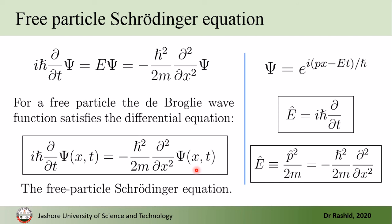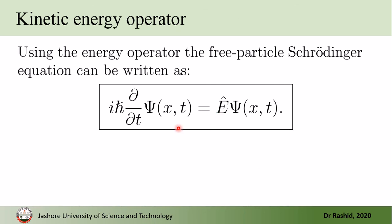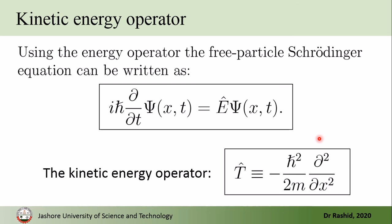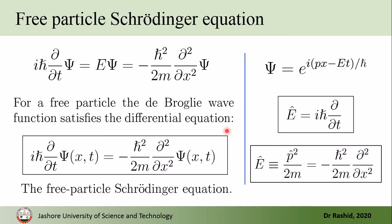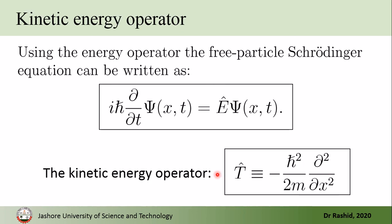We call it the free particle Schrödinger equation because when deriving this energy operator we only considered the momentum, since the particle is free — there is no potential. In terms of the energy operator we write it as iℏ(∂ψ/∂t) = Êψ. This Ê is the kinetic energy operator, written as T̂ = −(ℏ²/2m)(d²/dx²).